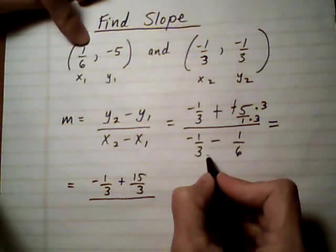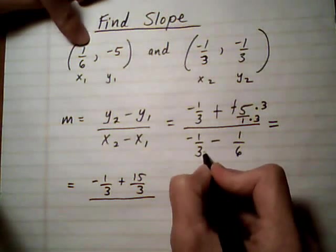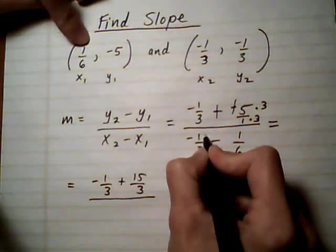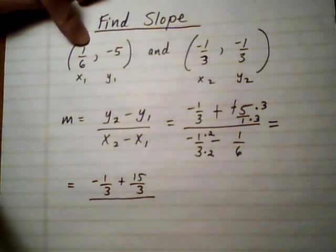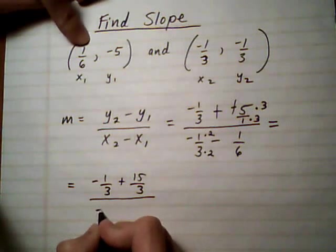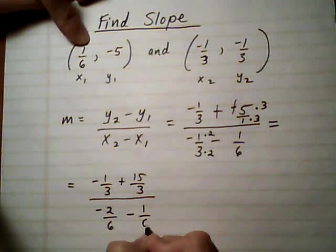Let's do the same for the bottom, get common denominators. So we'll use 6 for the LCD, which means I need to do times 2 times 2 on the first guy. And that gives me minus 2 over 6, take away 1 over 6.